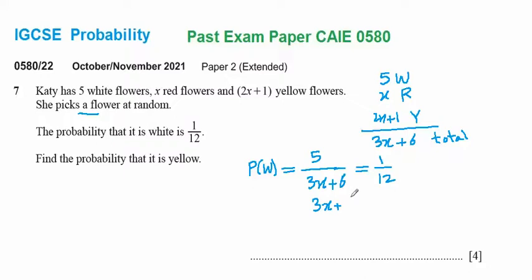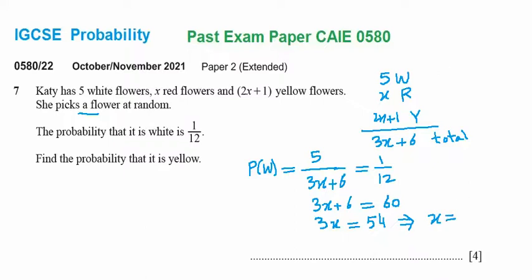Cross multiplying: three x plus six equals one times twelve, which is twelve... multiplied to give sixty. So three x equals sixty minus six, which is fifty-four. Therefore x equals fifty-four over three, which gives x equals eighteen.